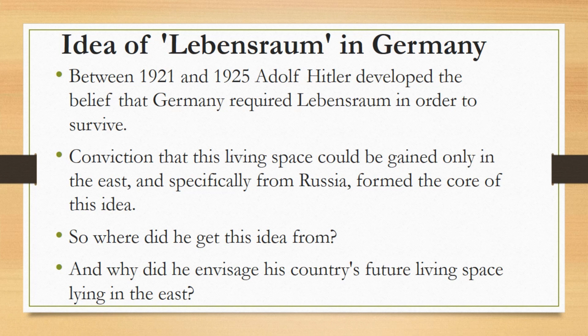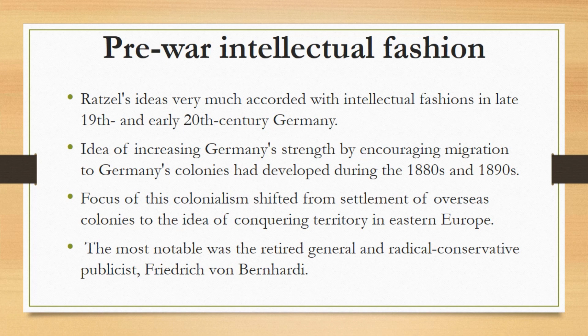Between 1921 and 1925, Adolf Hitler developed the belief that Germany required Lebensraum — that is, living space — in order to survive. The conviction that this living space could be gained only in the east, and specifically from Russia, formed the core of this idea and shaped his policy after his takeover of power in Germany in 1933. So where did he get this idea, and why did he envisage his country's future living space lying in the east? To understand this, let us look at pre-war intellectual fashions.